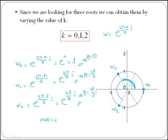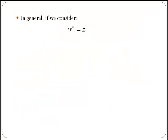In the general case, if you consider an equation like this, w to the n is equal to z where z can be a complex number or can be a real number. We can solve the equation by first rewriting z in polar or exponential form, and here you have to remember about these two pi k.